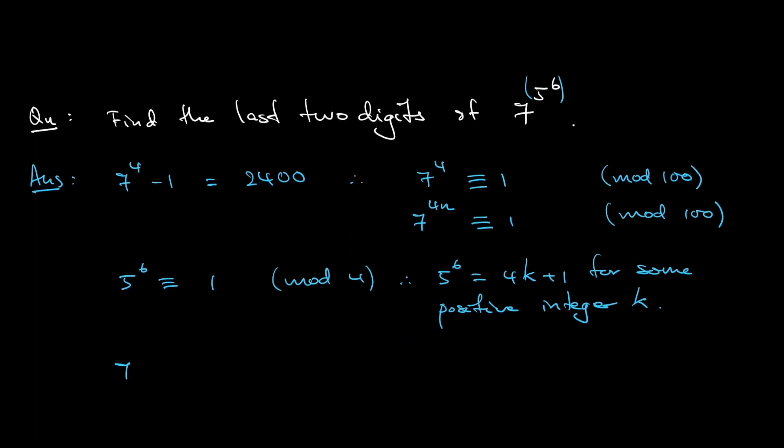Alright, so back to the main question, 7 to the power of 5 to the power of 6, that would be equal to 7 to the power of, instead of writing as 5 to the power of 6, I write it as 4k plus 1.